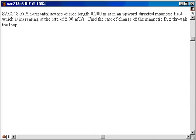Here's SAC 218 problem number three. It involves a square in an upward directed magnetic field. Let's draw a sketch of that.